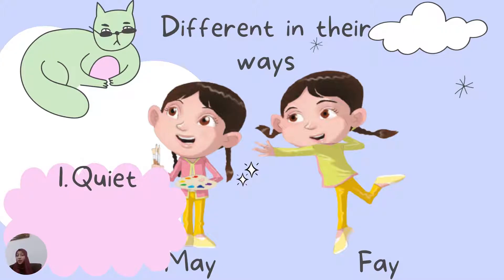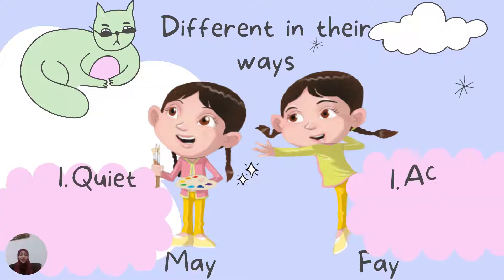Let us see in what ways they are different. When we look at May, we can see that she is holding painting brushes and colors. When we look at Faye, she is not holding anything but she is doing some movements. The first difference: May is quiet — very quiet. But Faye, MashaAllah, is active. She is not standing quietly; she is doing movements. She is active.